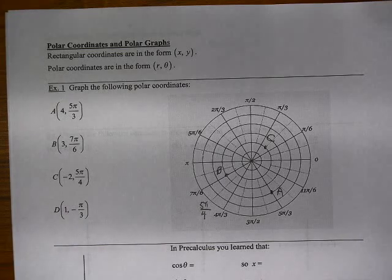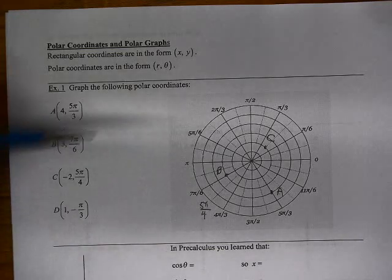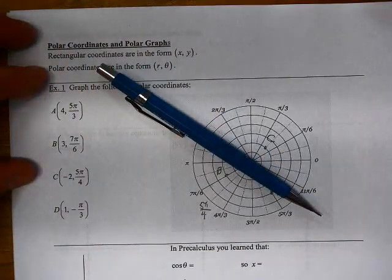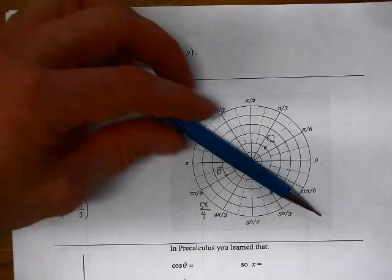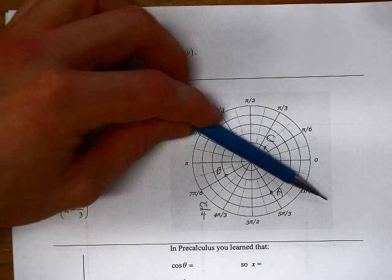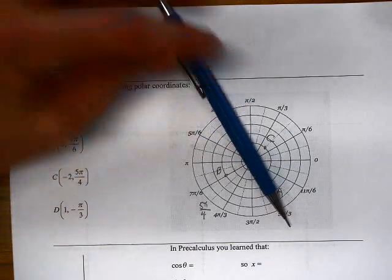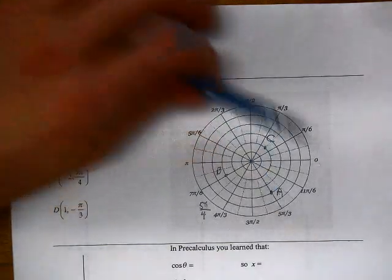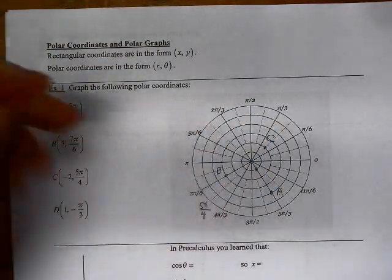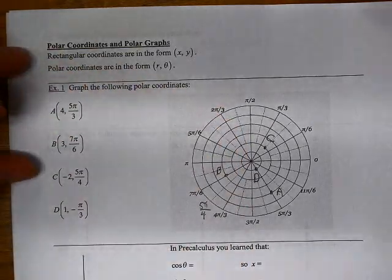And we could also have a negative angular measurement. In that case, we would just turn to the right or clockwise instead of to the left or counterclockwise. So we go negative π/3. So that would take us to here, to the 5π/3 line. And we're going to move forward 1 pace or 1 unit. And so point D is there.